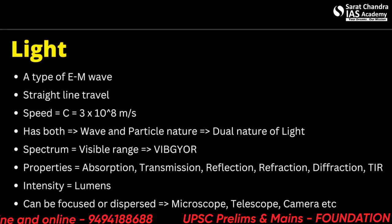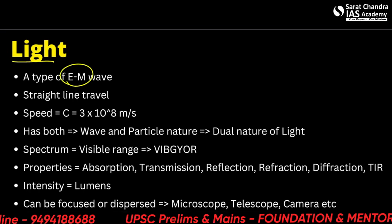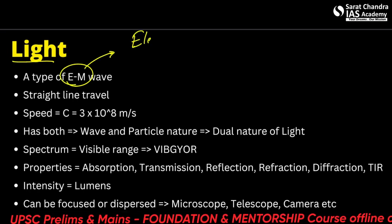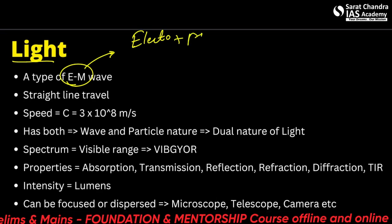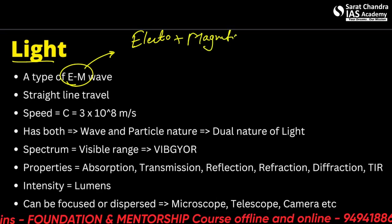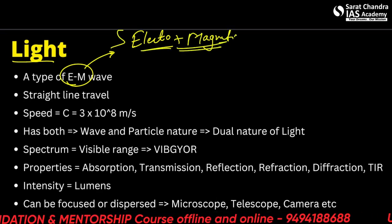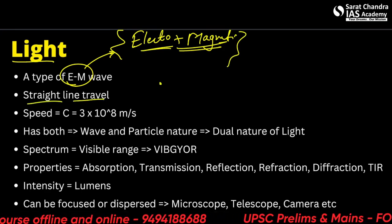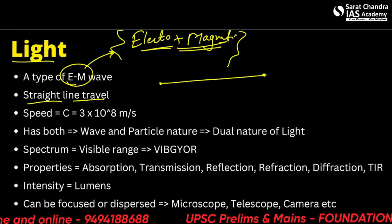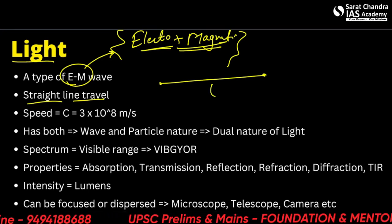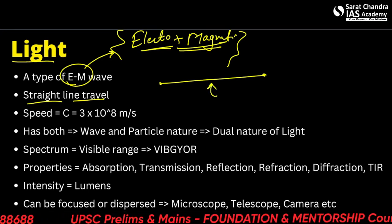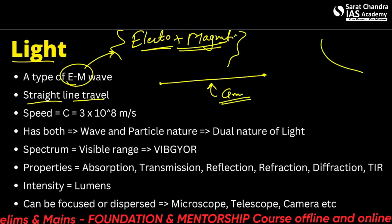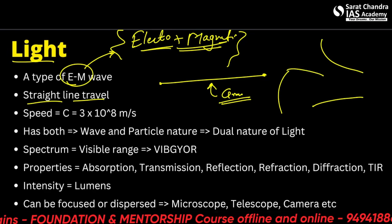Now let's talk about light. Light is a type of electromagnetic wave — it has both electric and magnetic components, meaning it displays both properties. It also travels in a straight line. However, light can be bent by gravity — for example, black holes absorb light even as it travels in a straight line. The speed of light is constant, denoted by C, at 3 × 10⁸ meters per second.